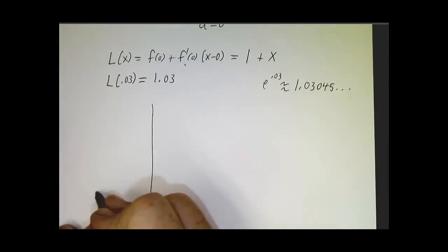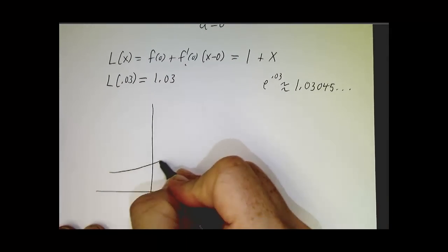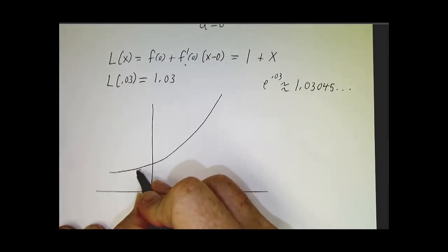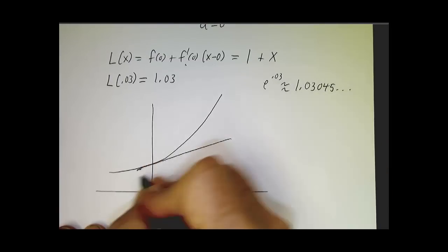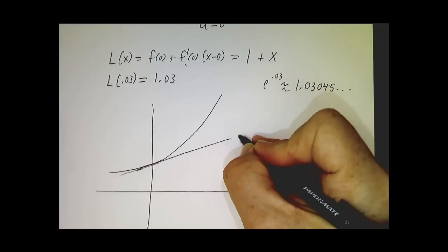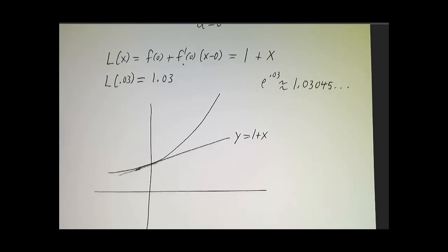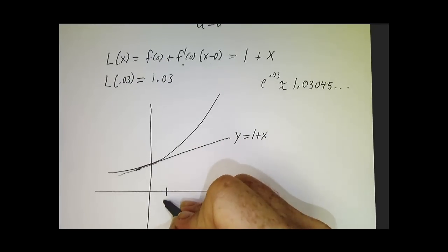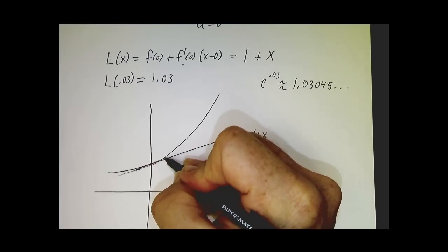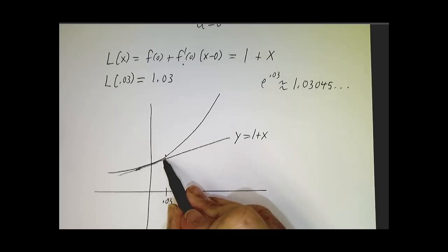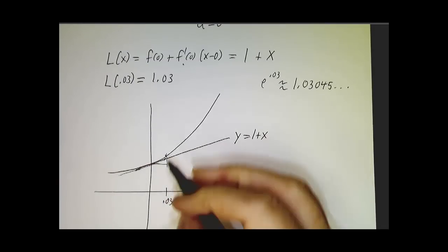In terms of pictures, we have our exponential function, and here we have our tangent line, and our tangent line is given by the linearization. We've got this point, 0.03, and what we care about is the value on the tangent line and the value that it really has.